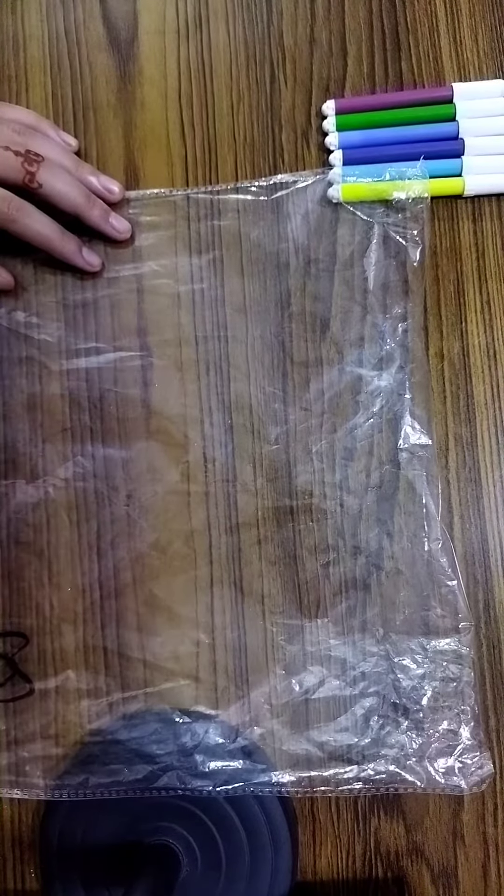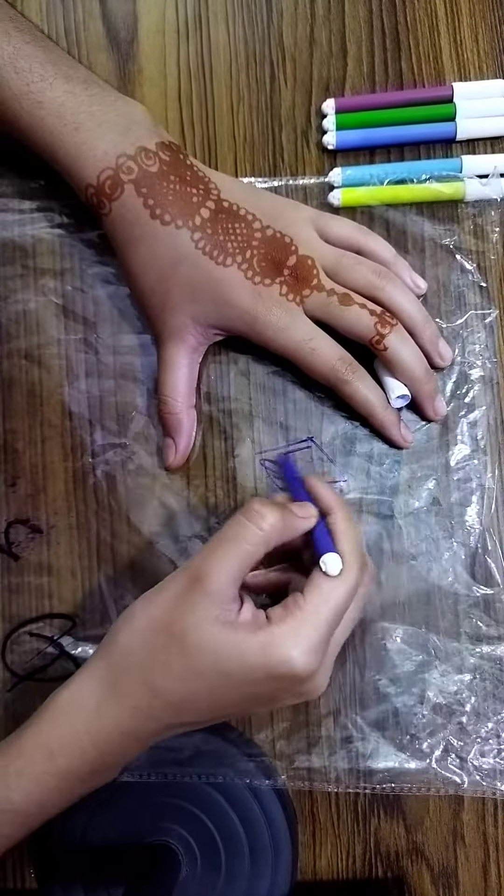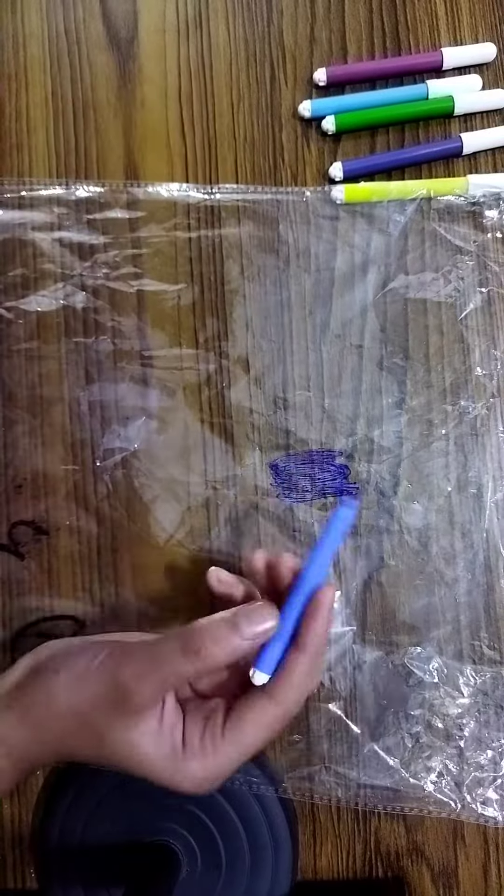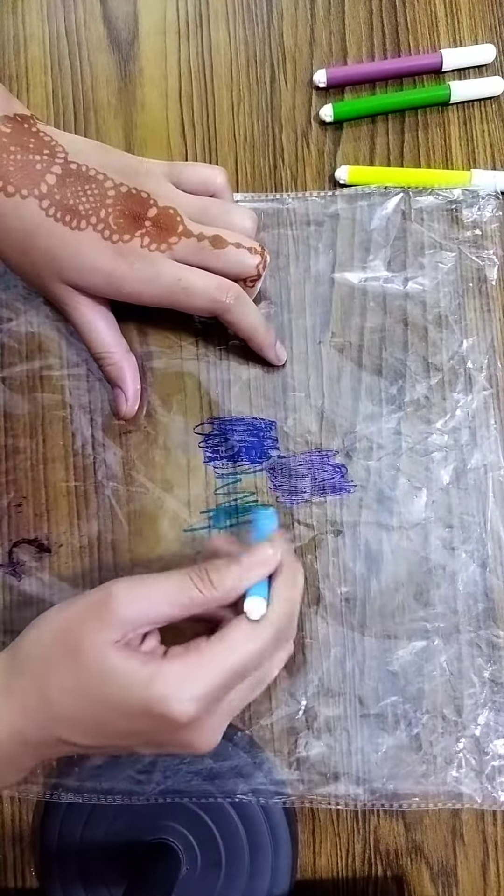First of all, I'm going to take a plastic sheet and I'm going to draw with the sketches on this. I'm going to draw with purple sketch, then with dark blue sketch, light blue sketch over here. I just want to do a good look.